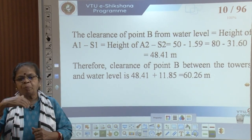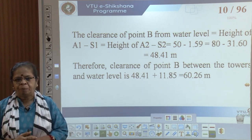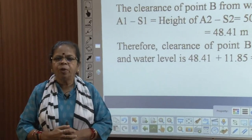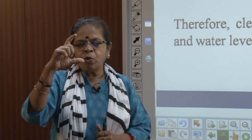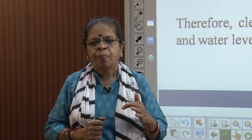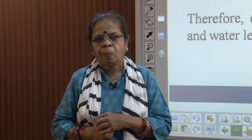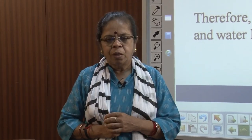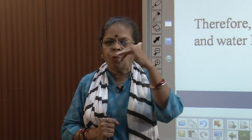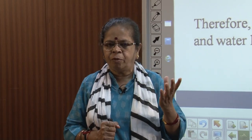Whenever you want to solve problems with supports at different heights, first draw the figure — that is very important. Once you have the figure in place, you will know what distances you need to calculate. The procedure: find the difference between the heights of the towers, calculate A1 and A2, decide whether the lowest point of the catenary lies within or outside the span, then from A1 and A2 get S1 and S2 — the vertical distances of the two supports from the lowest catenary point. Draw the figure correctly and calculations become simple.